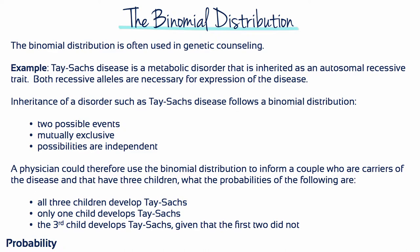Binomial distribution is often used in genetic counseling. For example, Tay-Sachs disease is a metabolic disorder that is inherited as an autosomal recessive trait. Both recessive alleles are necessary for expression of the disease. Inheritance of a disorder such as Tay-Sachs disease follows a binomial distribution. There are two possible events — inheriting the disease or not inheriting the disease. Both are mutually exclusive; a person can't both have the disease and not have it at the same time, and these two possibilities are independent of each other.